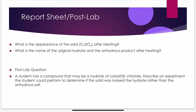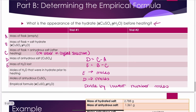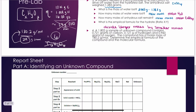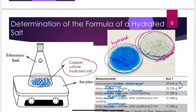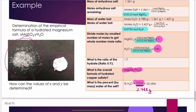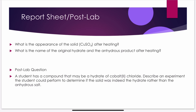Then your report sheet and post-lab: what is the appearance of the solid after heating? You should see something with a light blue tint — the copper gives it a bit of blue color. What is the name of the original hydrate and the anhydrous product after heating? Once you know x and y, you can name the original hydrate. You should be able to name the anhydrous salt without even doing the lab. For the post-lab question: a student has a compound that may be a hydrate of cobalt(II) chloride. Describe an experiment to determine if the solid is the hydrate rather than the anhydrous salt. Since you just completed an experiment like this, it should be easy. Good luck!